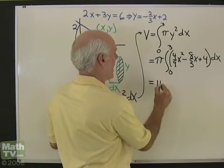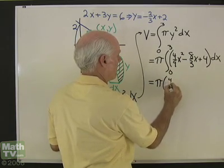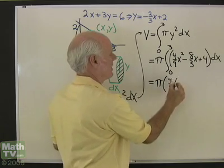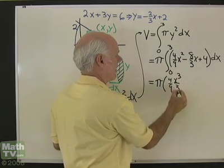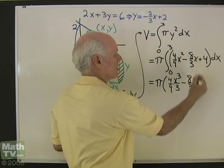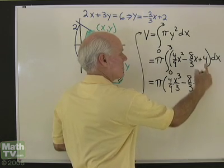Now I'll integrate. So I end up with pi times 4 ninths, the integral of x squared, x cubed over 3, that's right, minus 8 thirds times the integral of x, which is x squared over 2, plus the integral of 4, which is 4x.